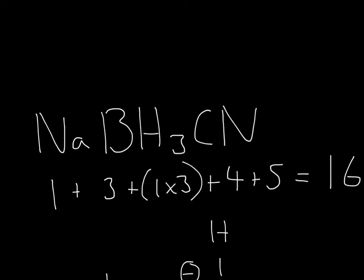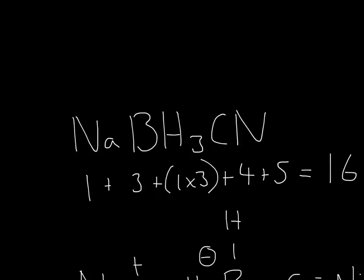So when we draw the Lewis structure, the first thing we need is the valence electrons. I put the number of valence electrons for each one of these atoms, and that will be 16.